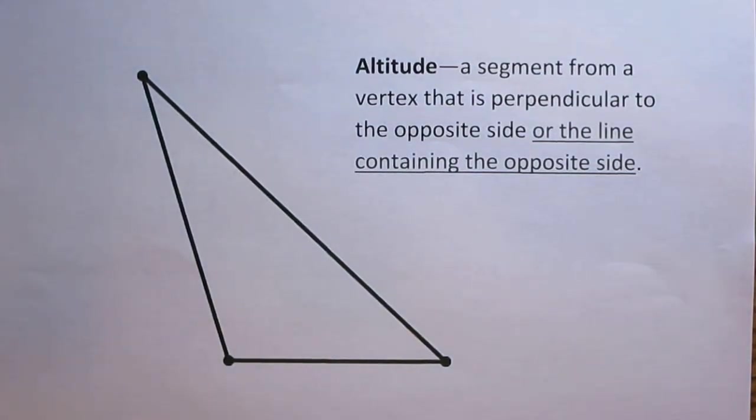We're going to look at how to create the altitude for a triangle when the triangle is obtuse. In my previous video I showed you how to create the altitudes for a triangle. The common point for the altitudes, the orthocenter, ended up being inside the triangle.